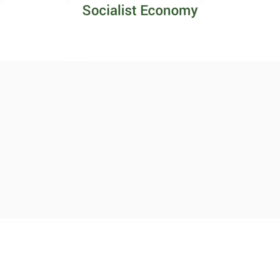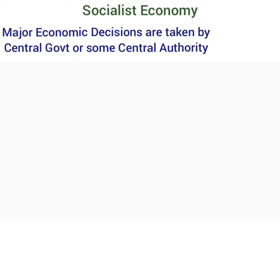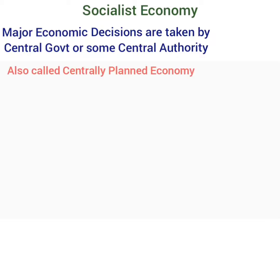A socialist economy refers to an economy in which all the major economic decisions of what to produce, how to produce, and for whom to produce are taken by the central government or some central authority. A socialist economy is also referred to as a centrally planned economy.